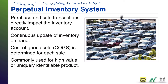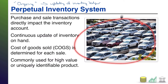Why is this a beneficial system to have? Well, it's good for high value or uniquely identifiable products. Think cars — that's the picture I have over here. Every single car has a unique identifier known as a vehicle identification number, a VIN, and that VIN is unique to that vehicle. Because of that, your accounting system can actually track for every single individual car how much you as a car merchandiser paid to obtain that car — what was your cost of the car. Therefore, when you sell that car, you know what your cost of goods sold was.